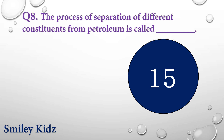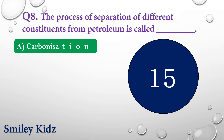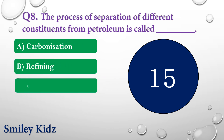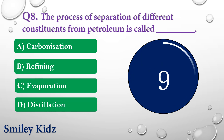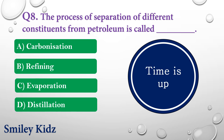Question number eight: The process of separation of different constituents from petroleum is called dash. The options are: A) Carbonization, B) Refining, C) Evaporation, or D) Distillation. Your time is up and the right answer is option B — Refining. The process of separation of different constituents from petroleum is called refining.